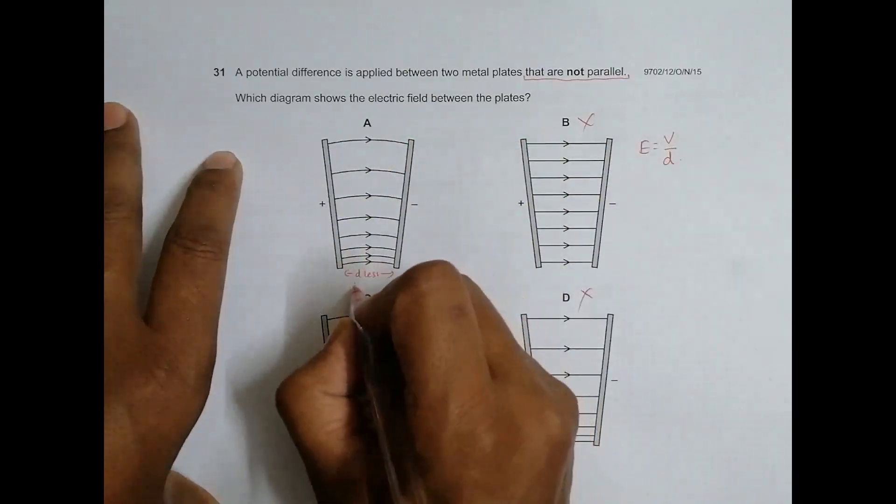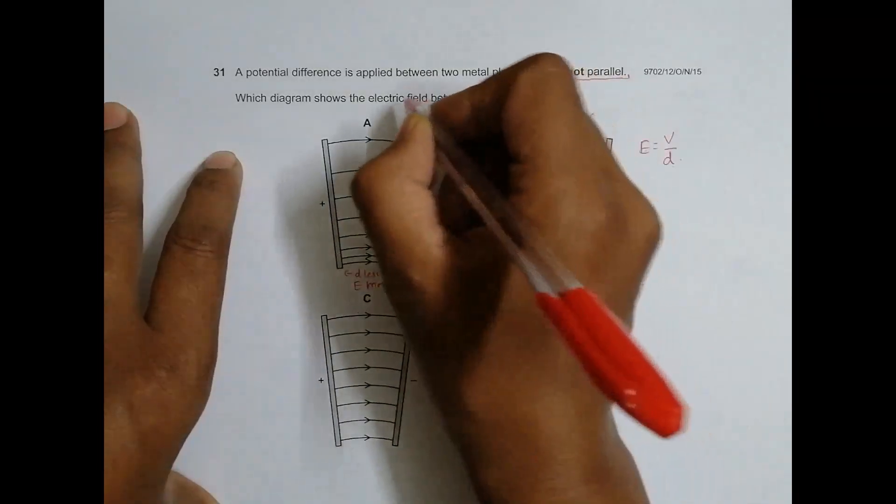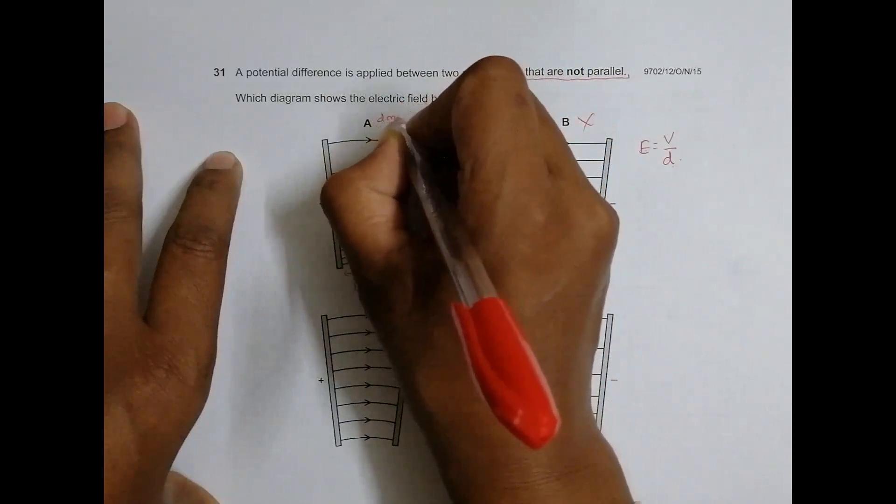If D is less, the electric field strength should be more here. So D less means E more, and here D is more, so E should be less.